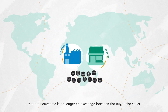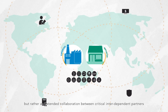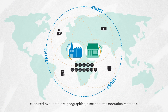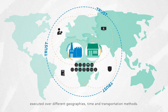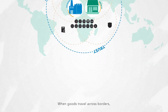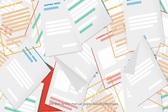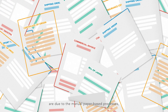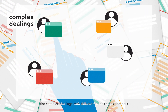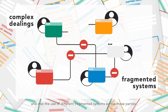Modern commerce is no longer an exchange between the buyer and seller, but rather an extended collaboration between critical interdependent partners executed over different geographies, time, and transportation methods. When goods travel across borders, the majority of trade frictions encountered are due to the manual paper-based processes, the complex dealings with different parties across borders, and the use of different fragmented systems across these parties.